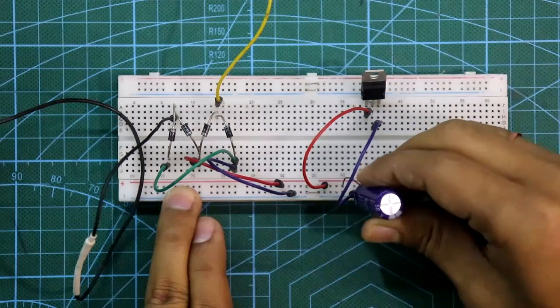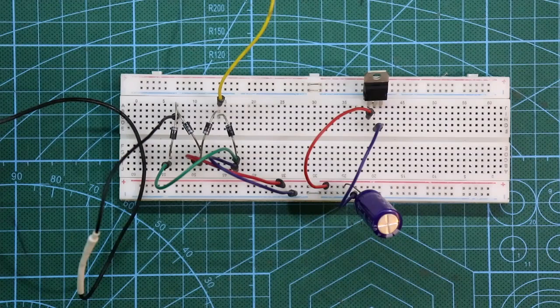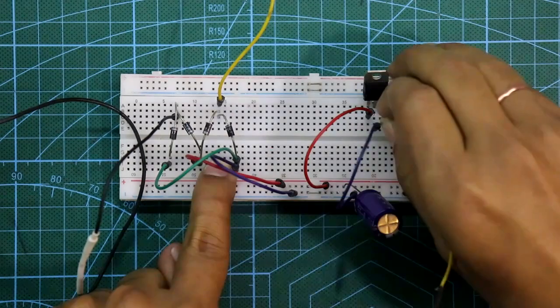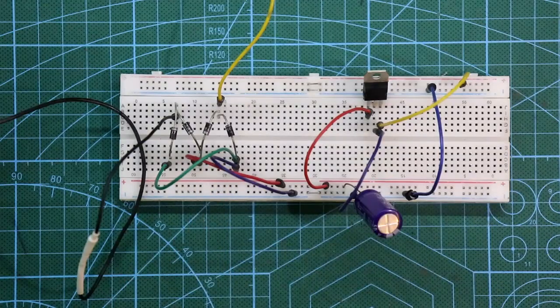We'll use this rail as output. As both the ground is common, I have connected both the ground rail and pin number three of the IC is connected to the output.